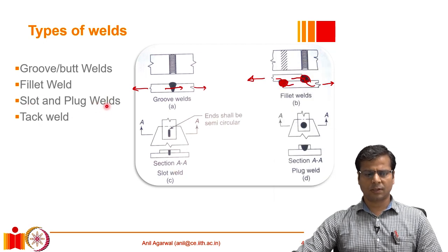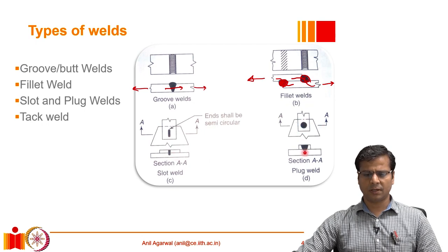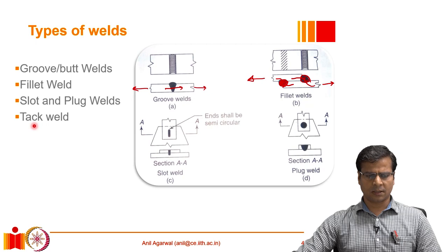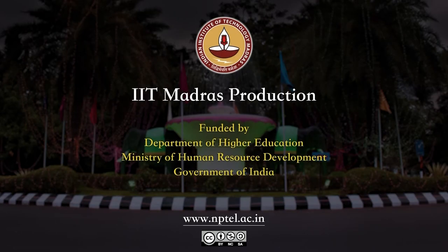Another type used less frequently is the slot or plug weld, used typically to prevent shear-type deformation or to join two plates resisting shear. An example is where the upper plate has a slot or hole, and that entire hole is filled with weld filler material, fusing the two plates together. There is also tack welding, which is not structural welding — it is used only to hold two members together temporarily until the final welding is done.